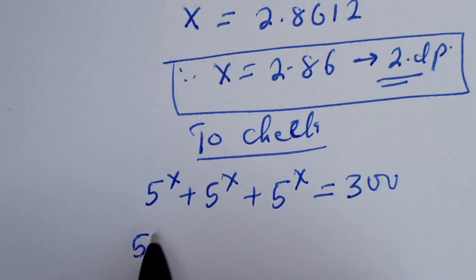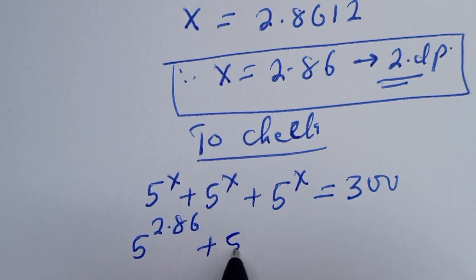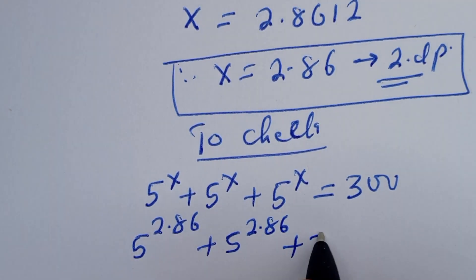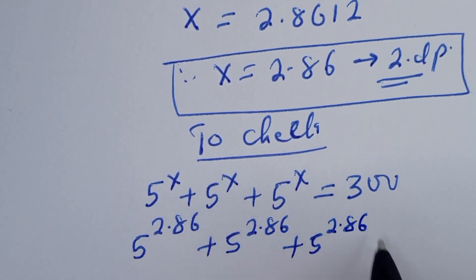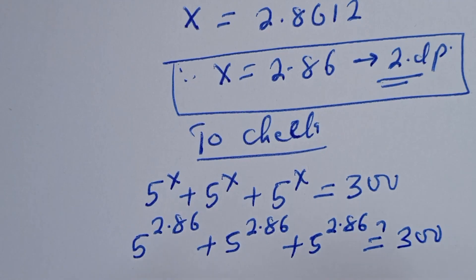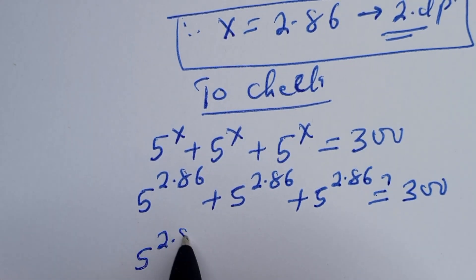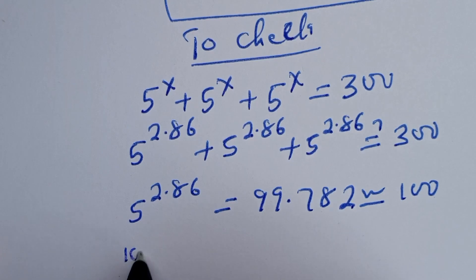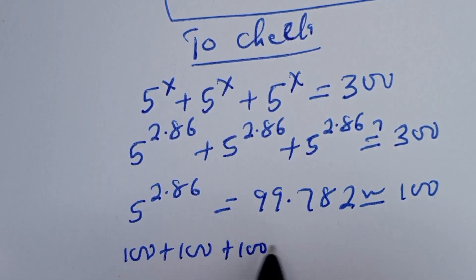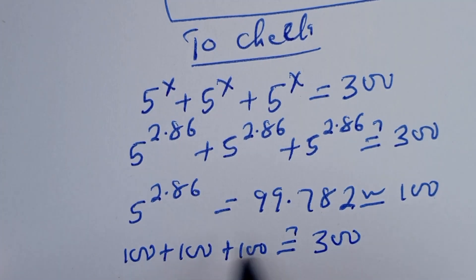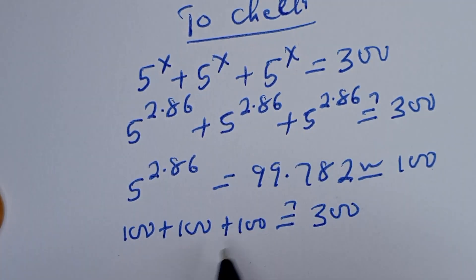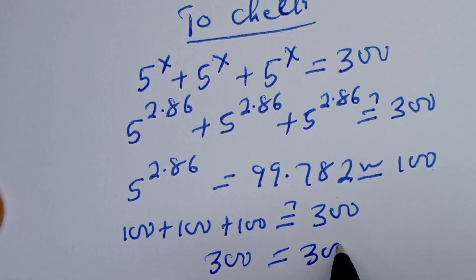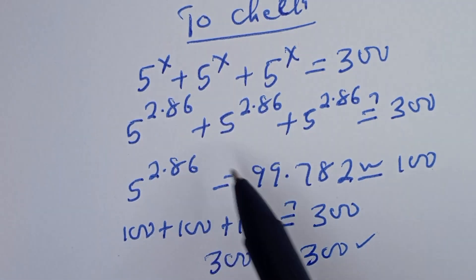Then we have 5 to the power of 2.86 plus 5 to the power of 2.86 plus 5 to the power of 2.86 must be equal to 300. Now 5 to the power of 2.86 is equal to 99.782, which is approximately 100. Therefore we have 100 plus 100 plus 100 must equal 300. Adding the left-hand side gives 300, which equals the right-hand side — 300. This is true.